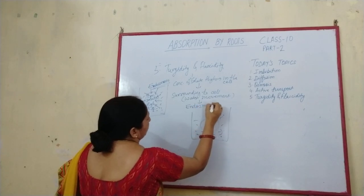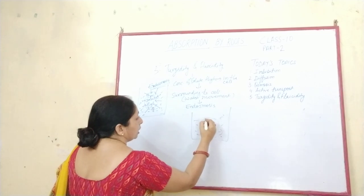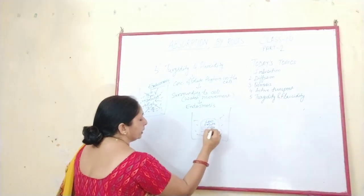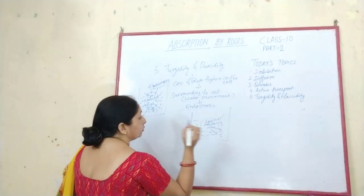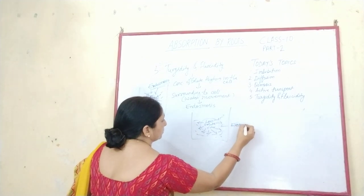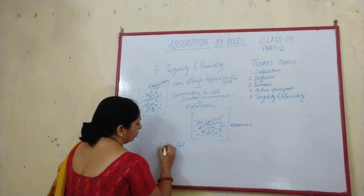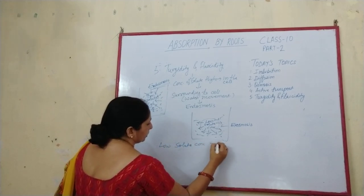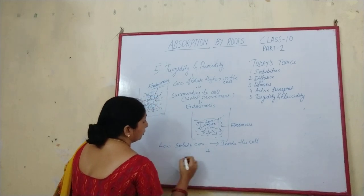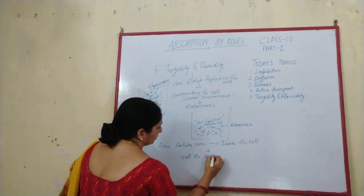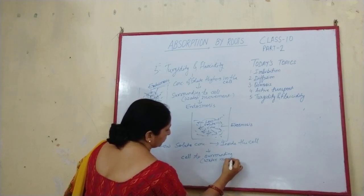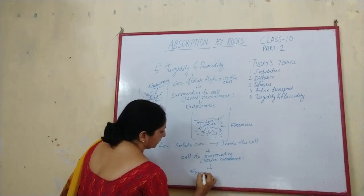When the concentration of solute is low inside the cell compared to the surrounding solvent, the movement of water molecules or cell sap would be from inside to outside. This process is termed exosmosis, and it results in the shrinkage of the cell.